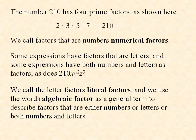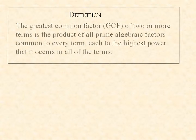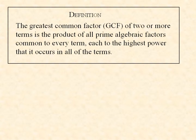We call the letter factors literal factors, and we use the words algebraic factor as a general term to describe factors that are either numbers or letters or both numbers and letters. Here's a definition: The greatest common factor, or GCF, of two or more terms is the product of all prime algebraic factors common to every term, each to the highest power that it occurs in all of the terms. We're going to have to see what it means through examples.